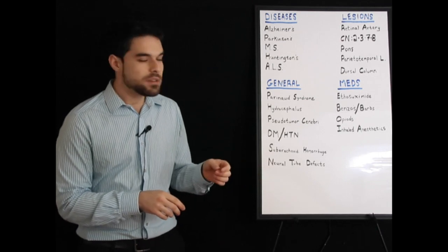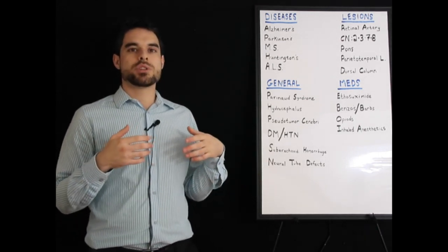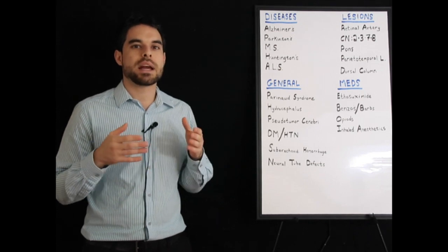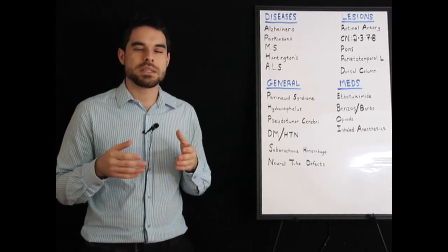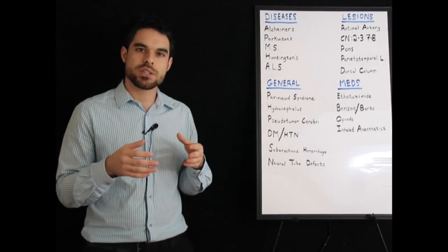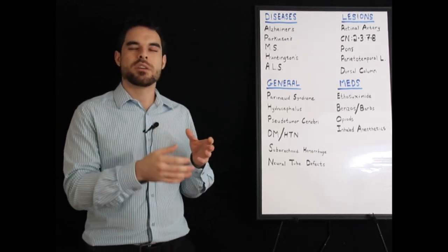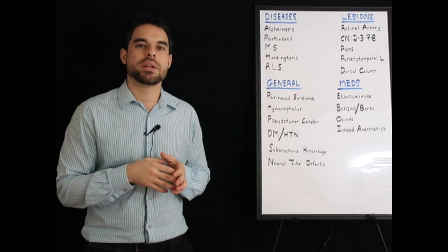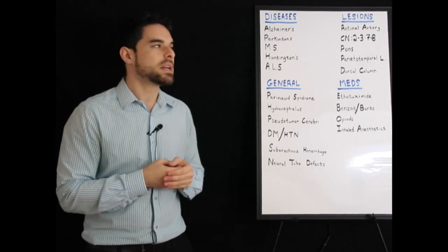A note on neural tube defects. They like you to know that you should give folate supplementation to try to avoid these, and that the diagnosis is made by seeing acetylcholinesterase in the amniotic fluid. Acetylcholinesterase should normally just be in the baby CSF. So if it leaked into the amniotic fluid, that's usually a sign that there's some kind of defect there.